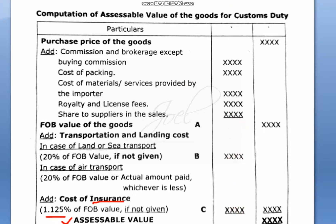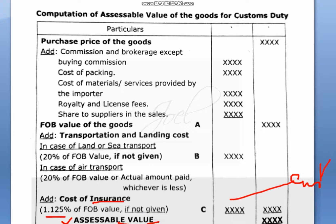After adding all these expenses, the final total is known as the assessable value. Customs duty is calculated on this assessable value itself. Understand the concept, write down the format, and pause the video to note it down. If you have any doubts you can ask. From the next class, we are going to solve problems related to this topic.